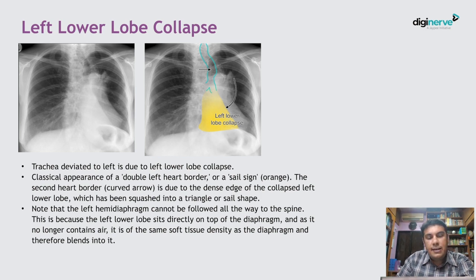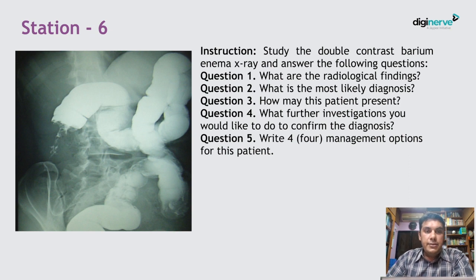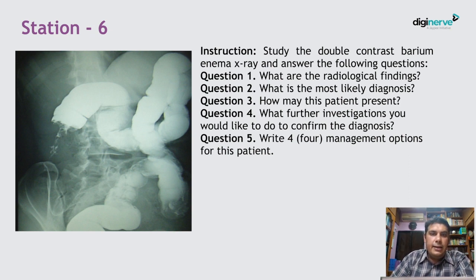This is a classical example of left lower lobe collapse. Station 6: Study the barium enema X-ray and answer the following questions. What are the radiological findings? What is the most likely diagnosis? How may this patient present? What further investigation would confirm the diagnosis, and what are the management options?